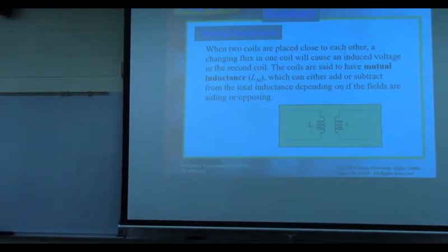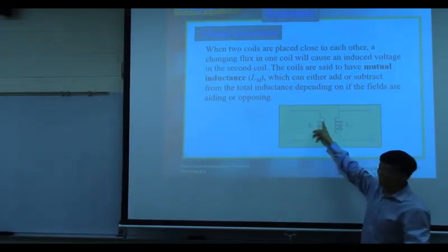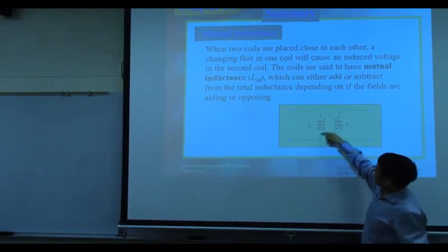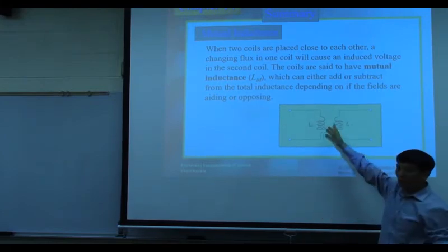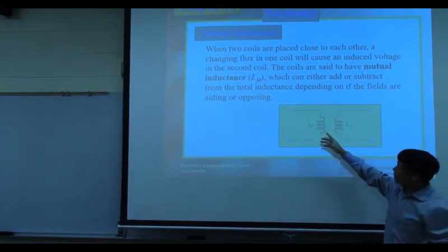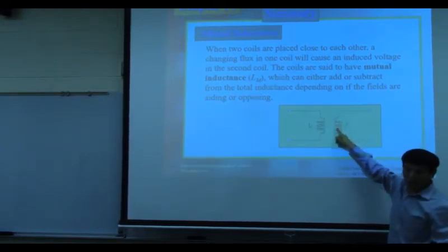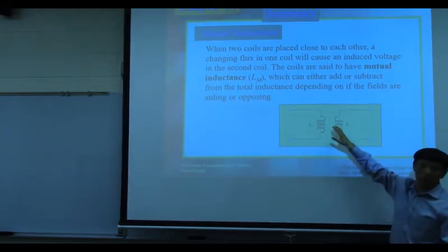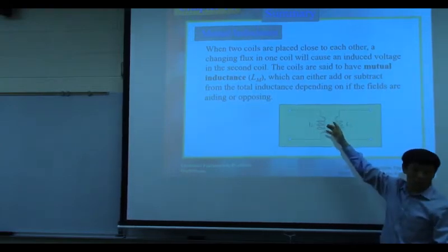Here, this is one coil and this is another coil. If we have a current flowing through here, then we are going to have a magnetic field. This flux may go into the second coil. Depending on the distance and material, the coupling may be strong or weak, but there will be some magnetic flux induced.